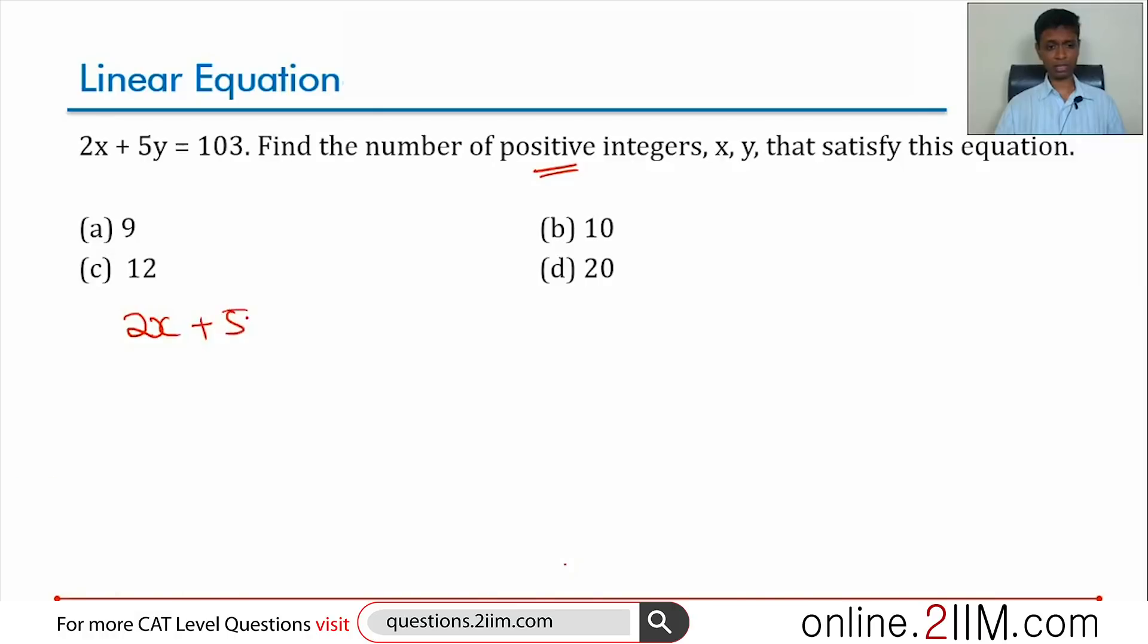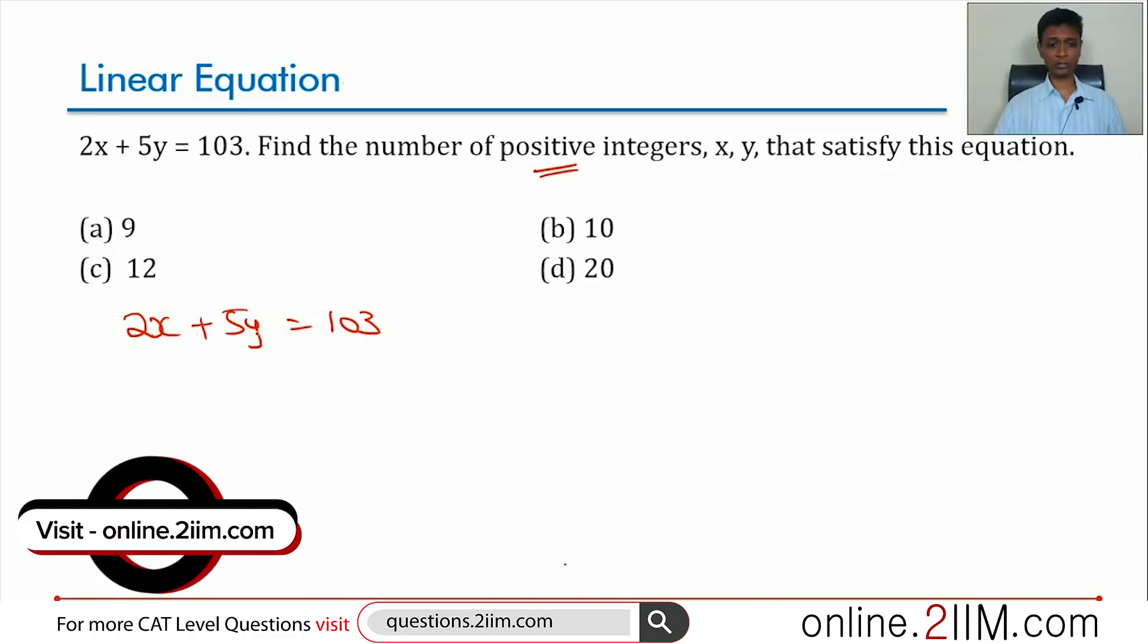We want to start off by trying to find one value. We know that 5y is a multiple of 5. So if you write this as 5y equals 103 minus 2x, then we knock off 2x from this. We should get a multiple of 5, and the multiple of 5 less than 103 is 100, but then 2x cannot be 3, so that is ruled out.